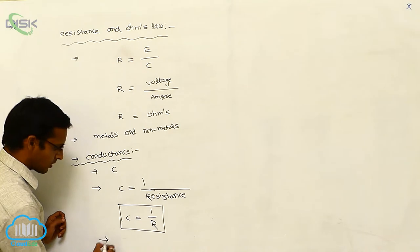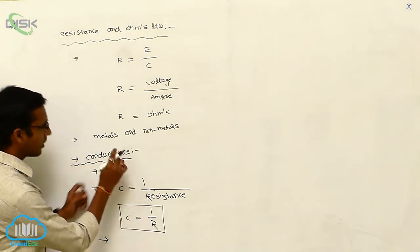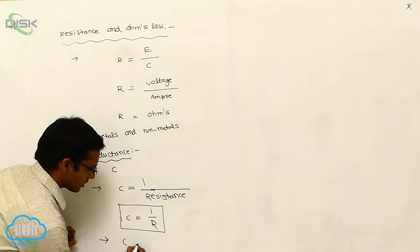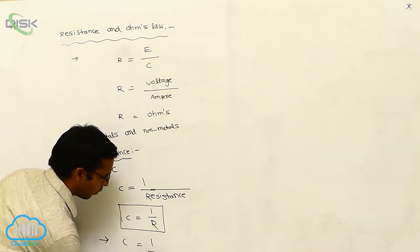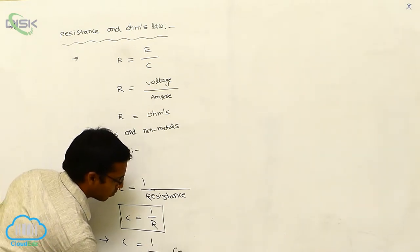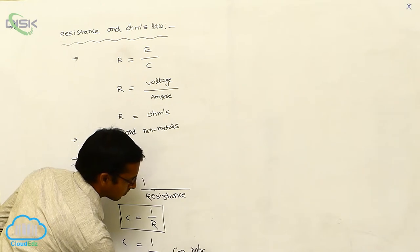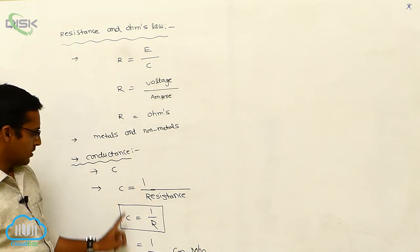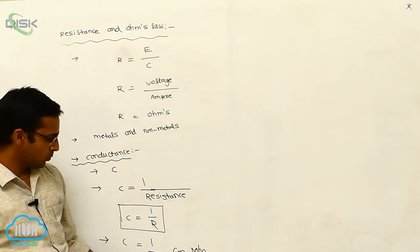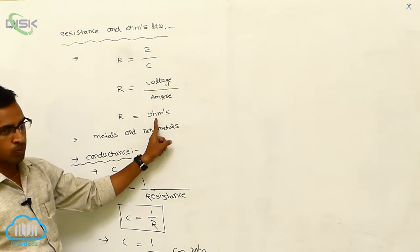The conductance unit is 1 by ohm, since the resistance unit is ohm.